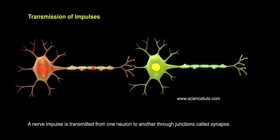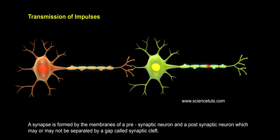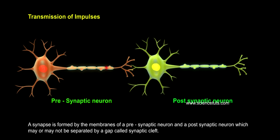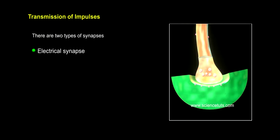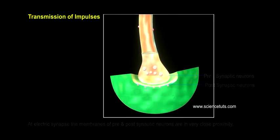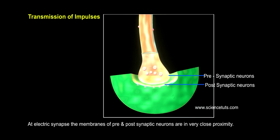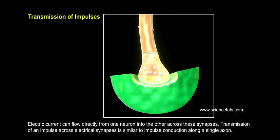Transmission of impulses: A nerve impulse is transmitted from one neuron to another through junctions called synapses. A synapse is formed by the membranes of a presynaptic neuron and a postsynaptic neuron, which may or may not be separated by a gap called the synaptic cleft. There are two types of synapses: electrical synapse and chemical synapse. At an electrical synapse, the membranes of pre- and postsynaptic neurons are in very close proximity, and electric current can flow directly from one neuron into the other. Transmission across electrical synapses is similar to impulse conduction along a single axon.